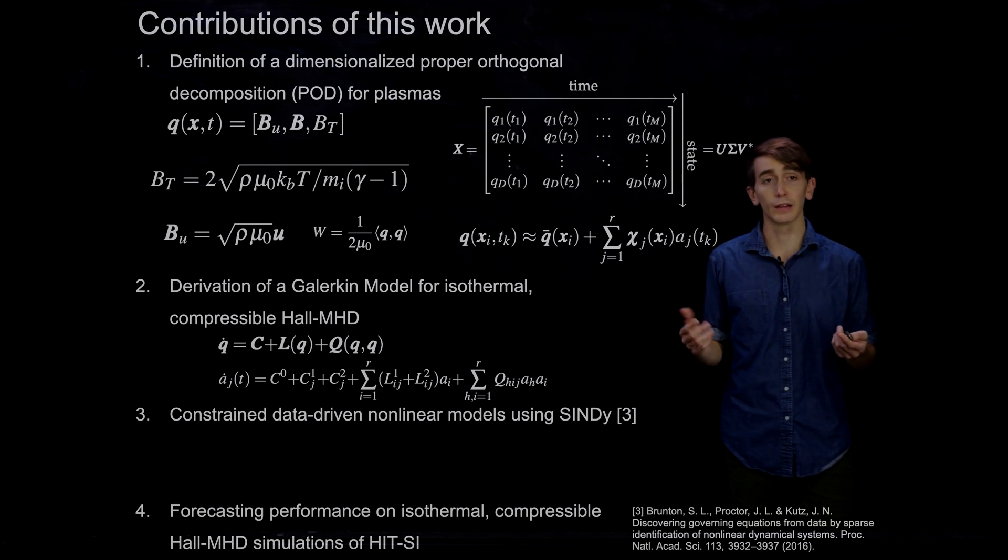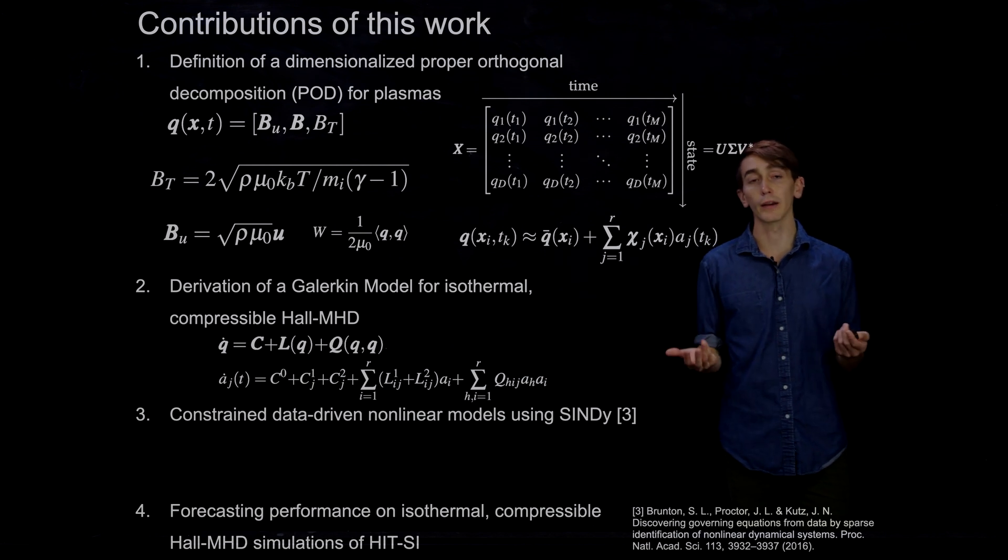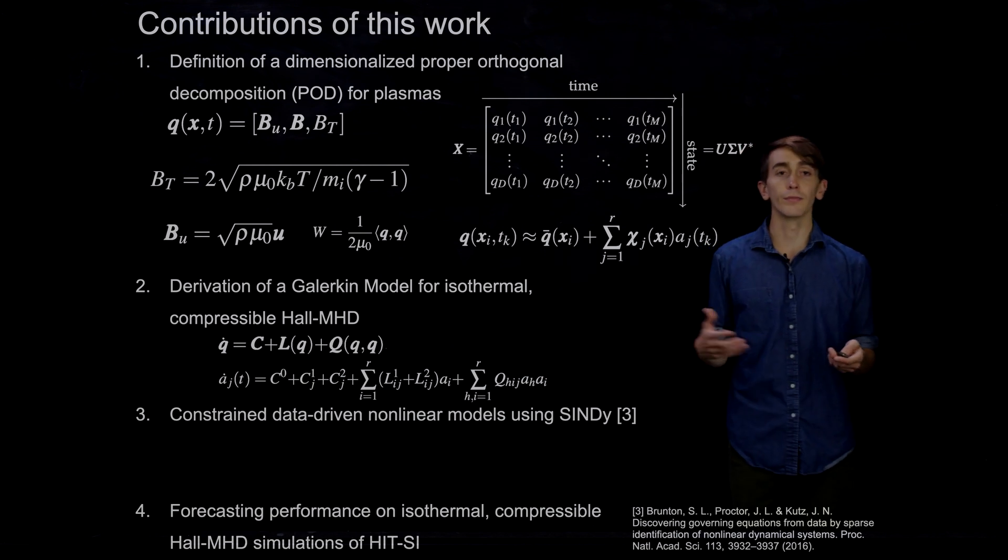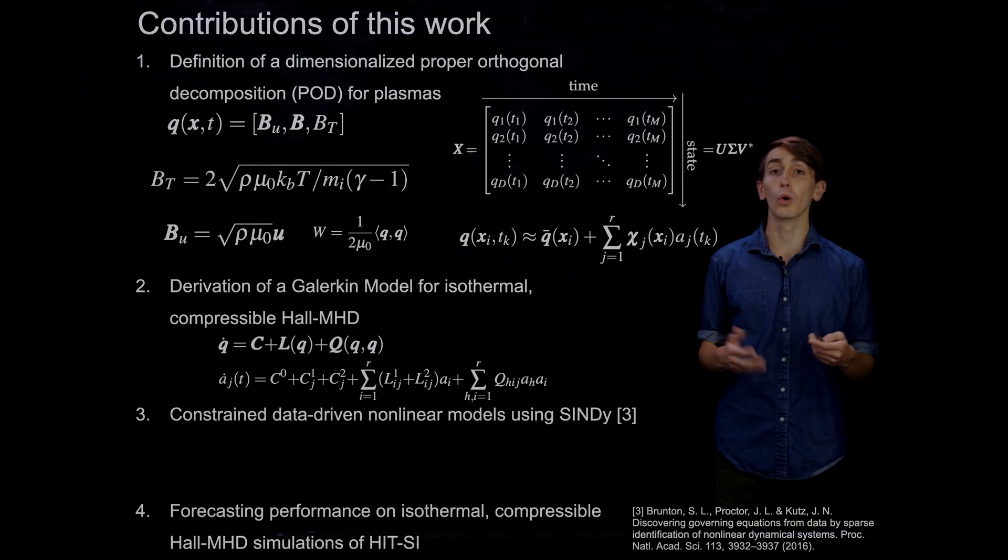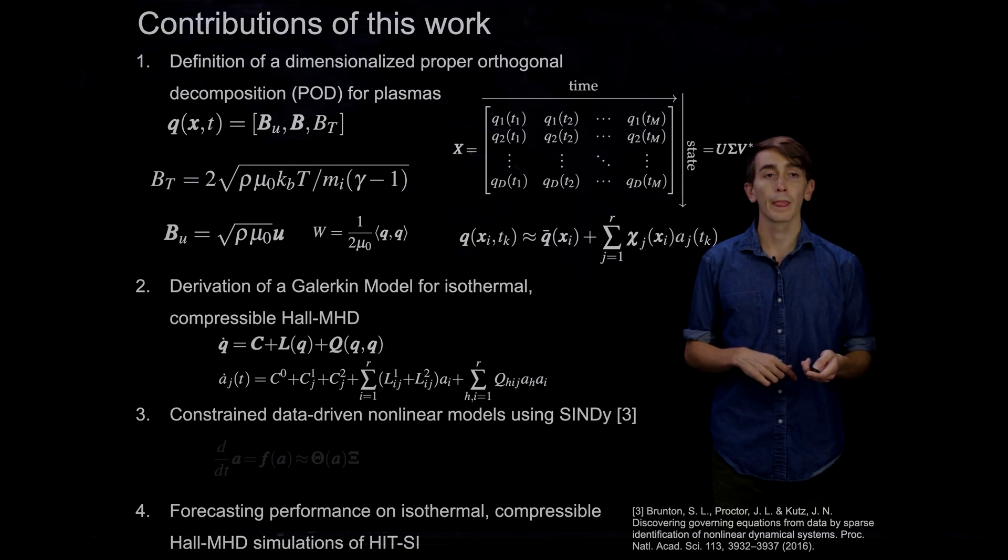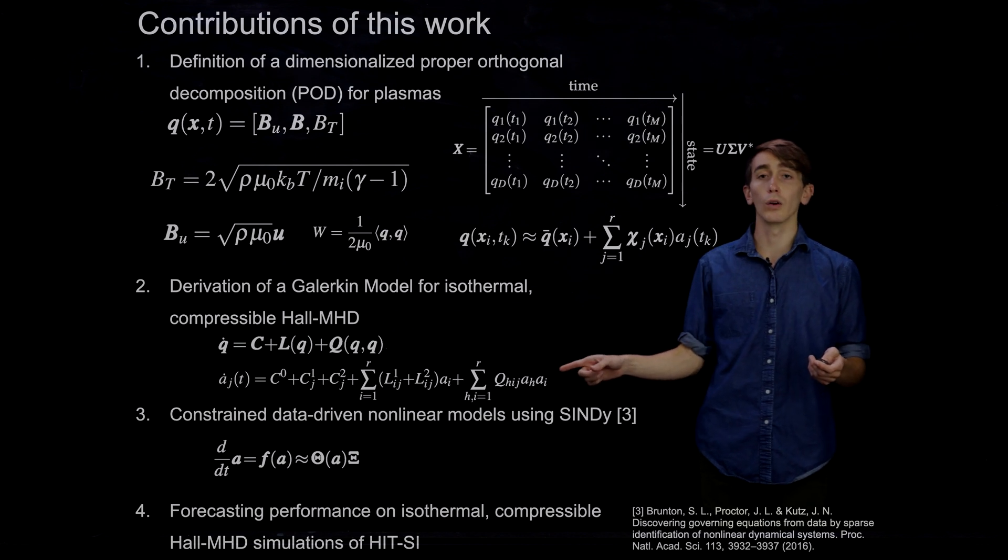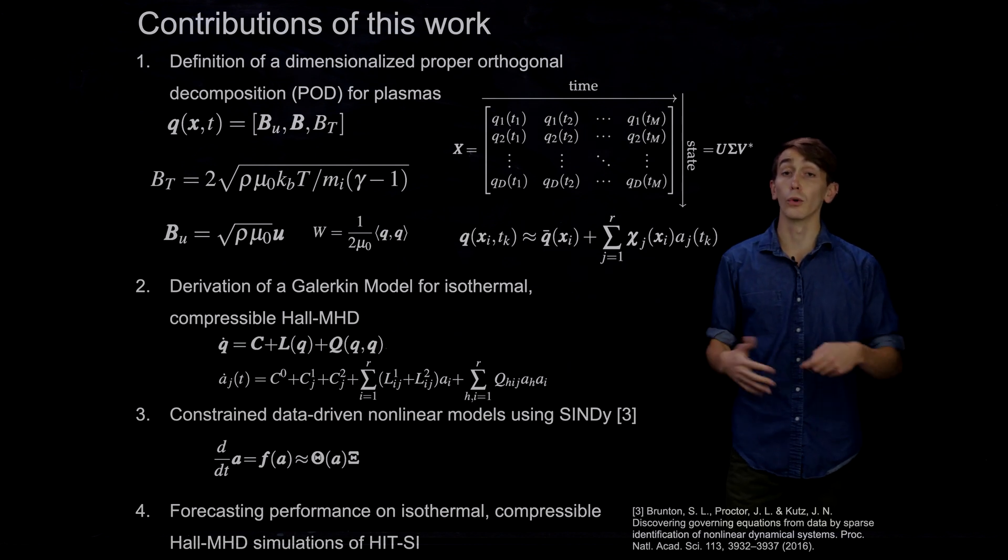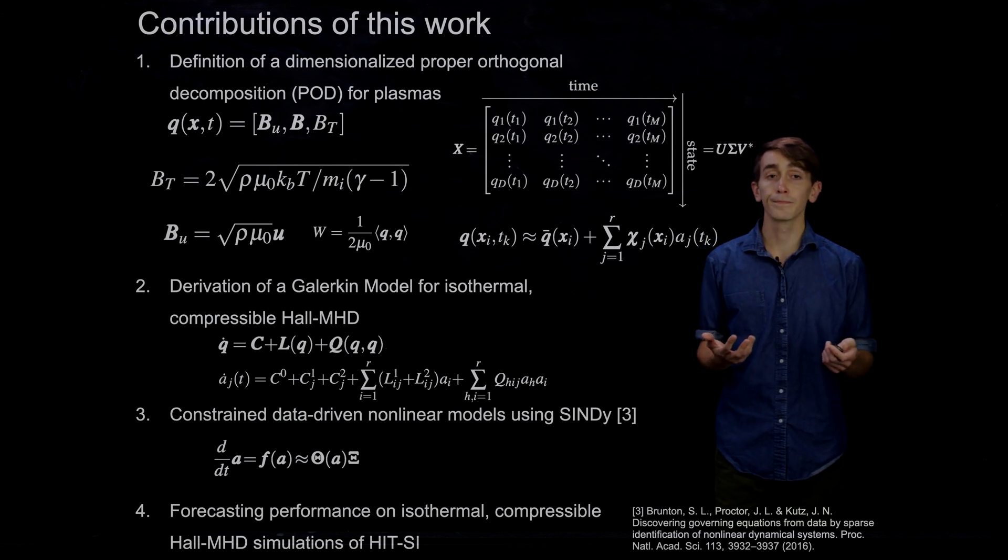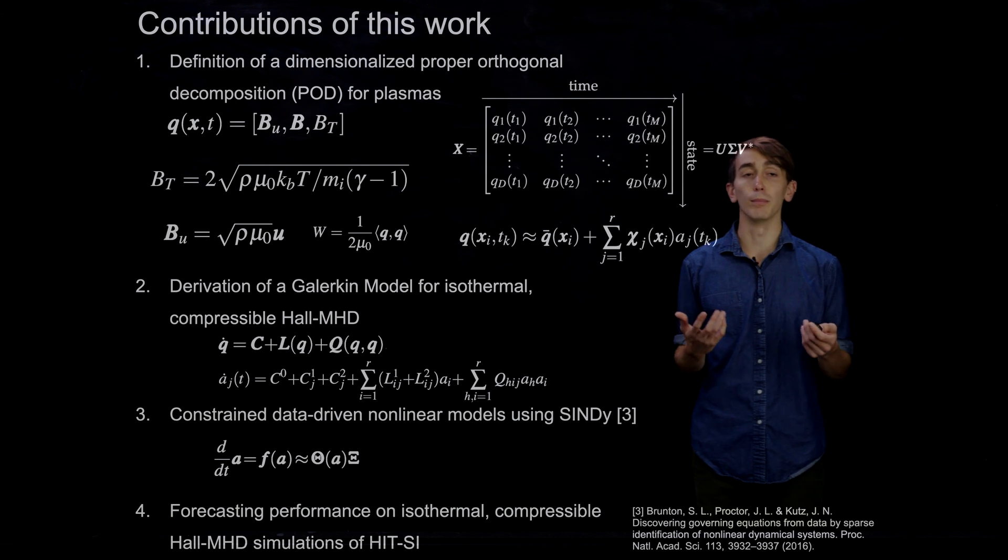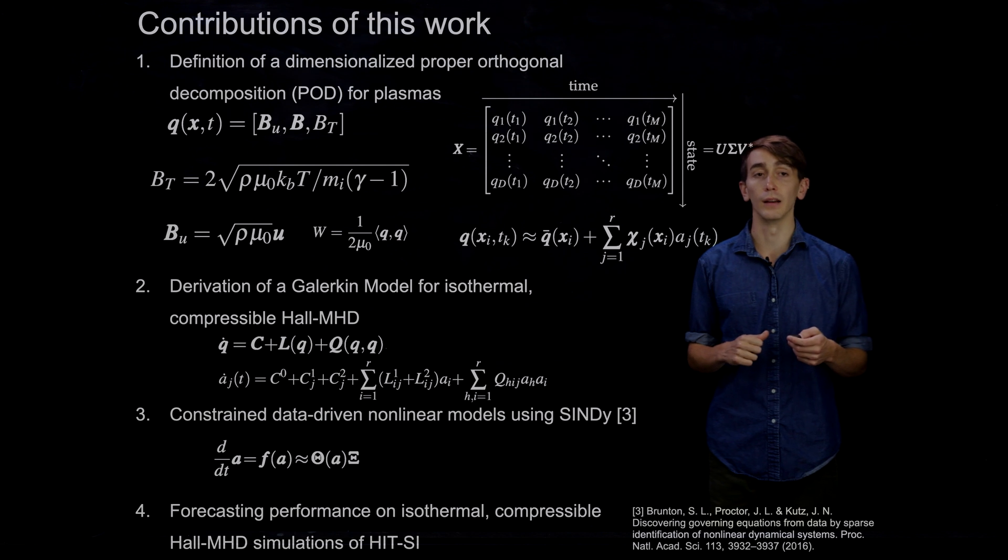And basically this is a really nice reduction. All these coefficients are complicated spatial inner products in principle, but what we found is a quadratic non-linear system of ODEs for the temporal POD modes of this vector Q. And so in principle, we could calculate all these coefficients and forecast our plasma in this way. It turns out that can be quite laborious as well.